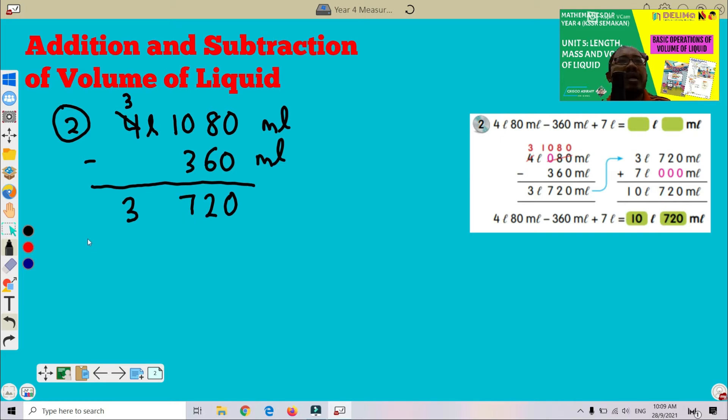Now we plus with 7 liter. Make sure you write down the number according to the unit. Pastikan bila awak tambah dan tolak tulis ikut unit masing-masing jangan tersalah masuk rumah. Kalau liter tulis dekat liter kalau milliliter tulis dekat milliliter. Here milliliter will be 0 since we plus 7 liter only. Jadi, kat sini kita tambah 7 sahaja. Kat milliliter ni kosong sebab takde, 7 liter sahaja.